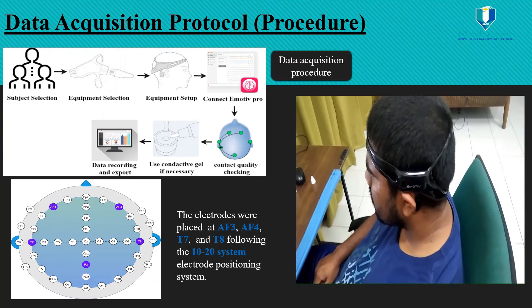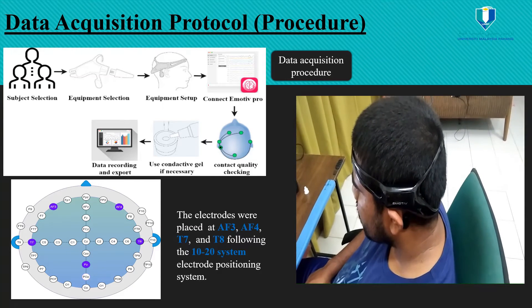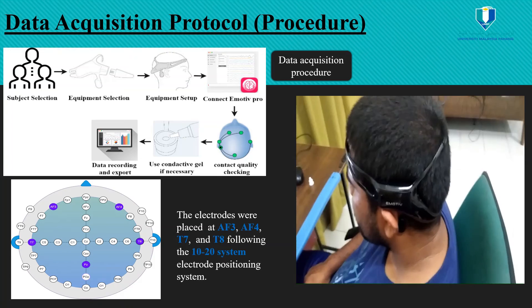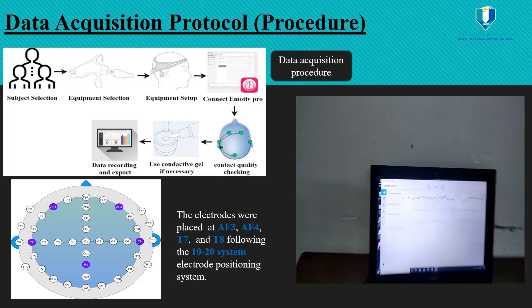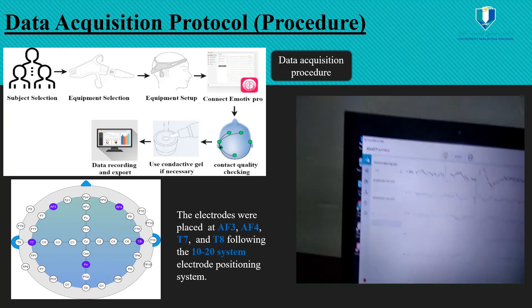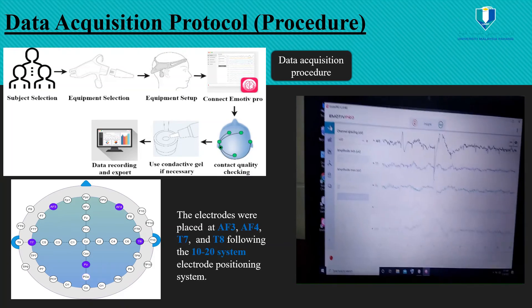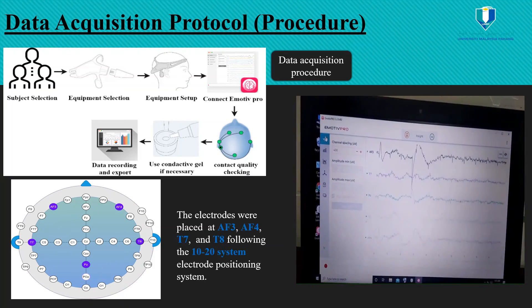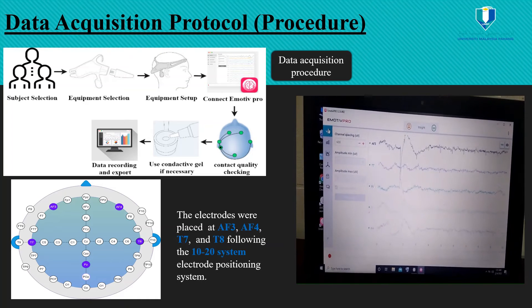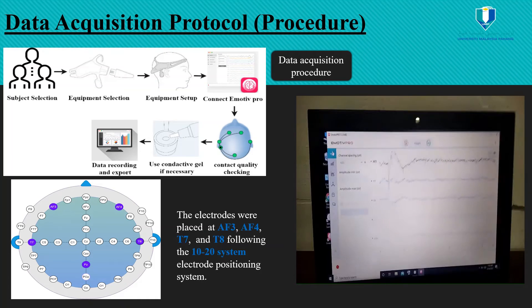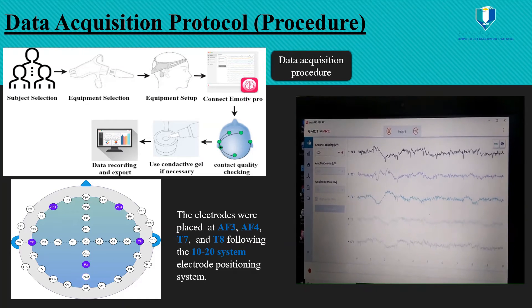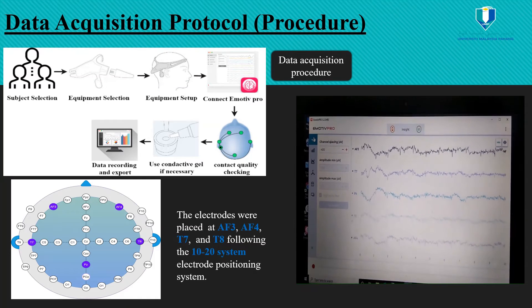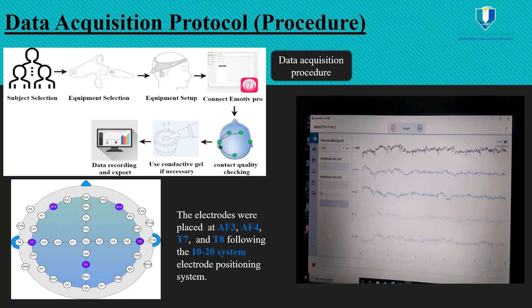This figure shows the data acquisition procedure. First, we select the subject. Then we select suitable equipment from which we can collect the ABR dataset. In this study, we have used the 5-channel Emotiv Insight device.